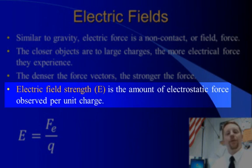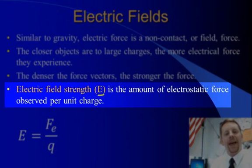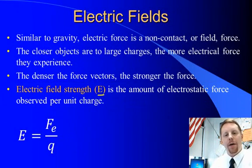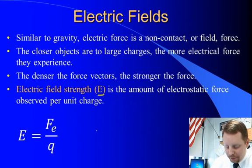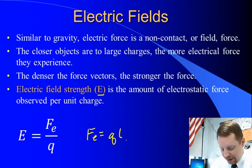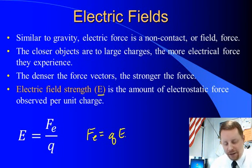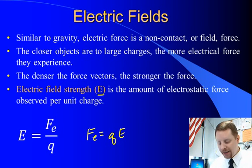We'll measure this with electric field strength, capital E, which is the amount of electrostatic force you would have for any given charge you placed in that field. Typically we'll talk about a positive point charge. The formula for the electric field strength E is the electric force divided by the charge that is felt, where you'll also sometimes see this written as the electric force equals the charge times the electric field strength. The electric field strength is in the same direction as the force, so they are vectors.